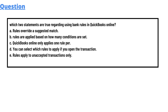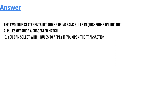We have five options here. Option A: rules override suggested match. Option B: rules are applied based on how conditions are set. Option C: QuickBooks Online only applies one rule per year. Option D: you can select which rule to apply if you open the transaction. Option E: rules apply to unmatched transactions only.